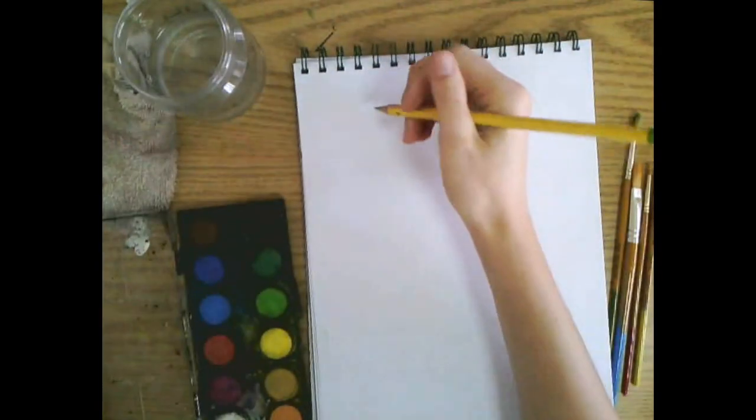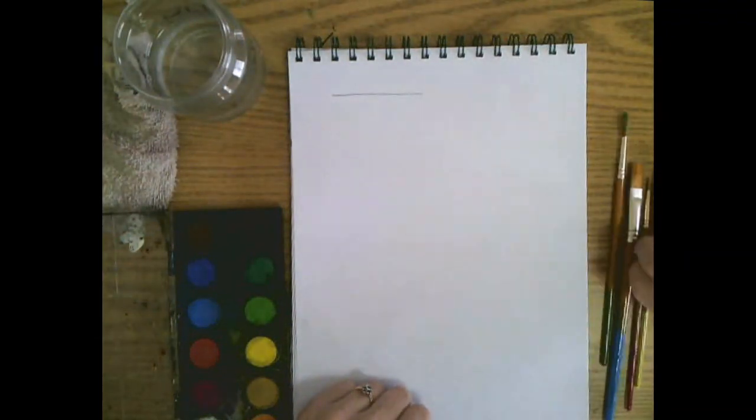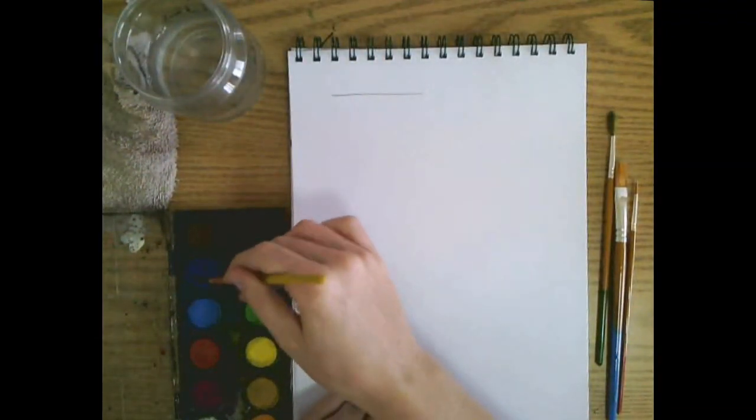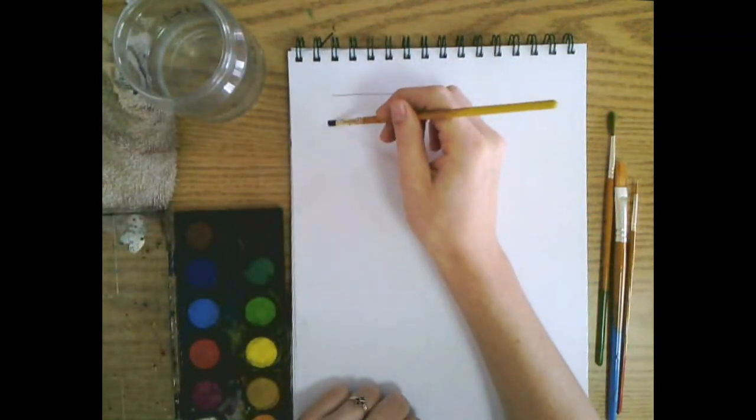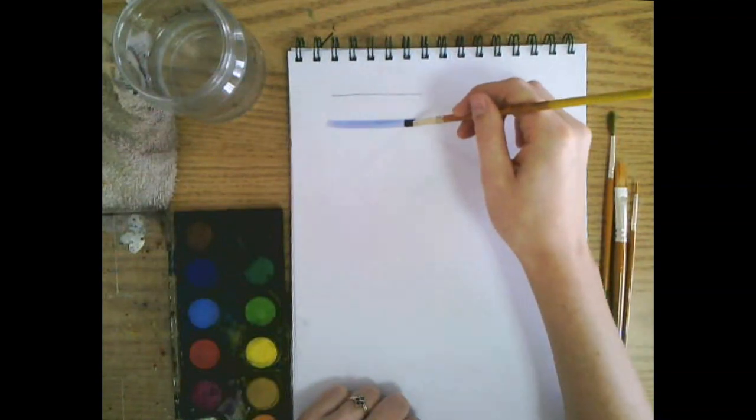Brush strokes! When we use a pencil and draw a line, we call it a pencil line. When we use a paintbrush with paint, we call it a brush stroke. So a brush stroke is a line or a mark that is left by paint from a paintbrush.